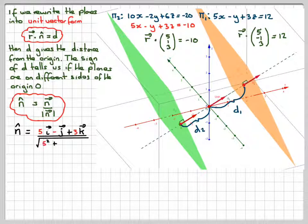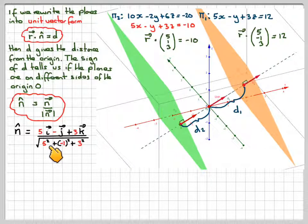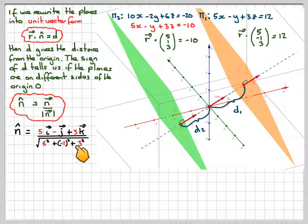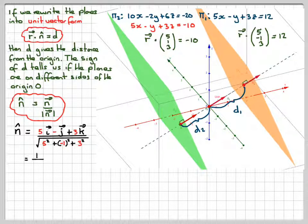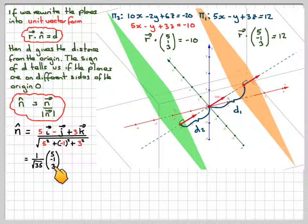The magnitude is √(5² + (−1)² + 3²) = √(25 + 1 + 9) = √35. So the unit normal vector is (1/√35)(5, −1, 3), which has a length of 1.